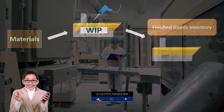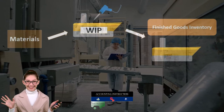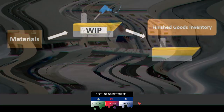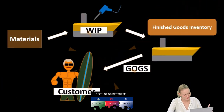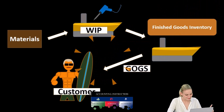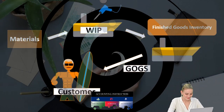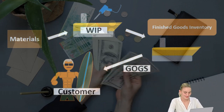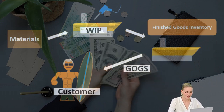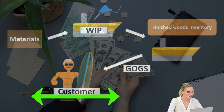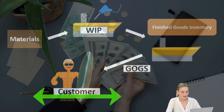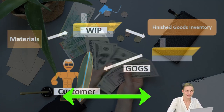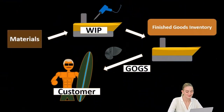When we do sell it, we'll have a similar transaction as if we were just purchasing and selling inventory, in that we will have to track the inventory in cost of goods sold — the related expense account — as the finished goods inventory goes down and cost of goods sold, the expense account, goes up when we give the finished goods to the final customer.